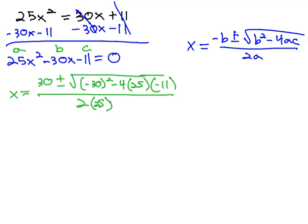And now we just have to simplify this to get our final answer. As I simplify, I always do the exponents and the multiplication first, so we get x equals 30 plus or minus the square root of 30 squared, which is 900.